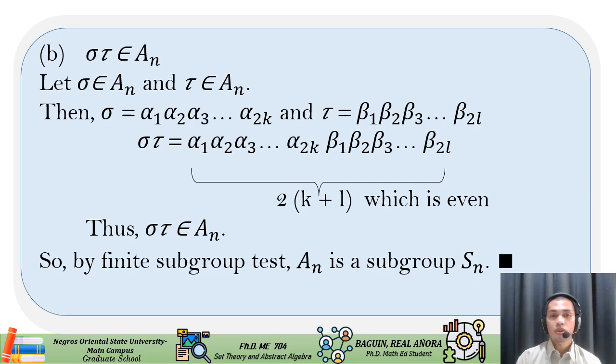If we compose sigma and tau together, we have alpha sub 1, alpha sub 2, alpha sub 3, until alpha sub 2k, beta sub 1, beta sub 2, beta sub 3, until beta sub 2l. Notice that the total is equal to 2 times the quantity of k plus l, and 2 is even.